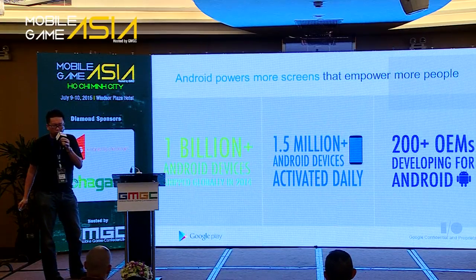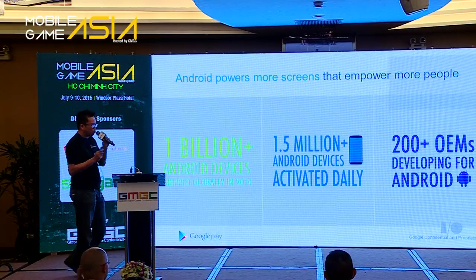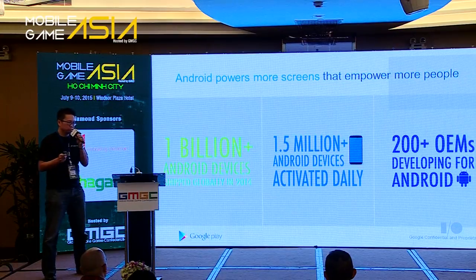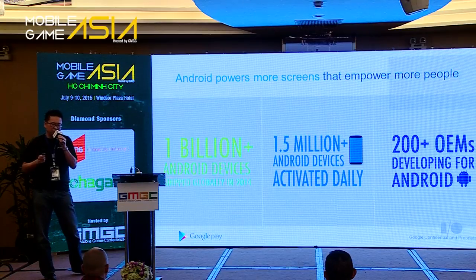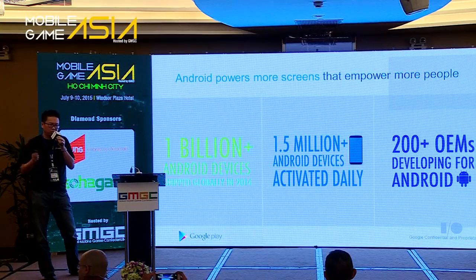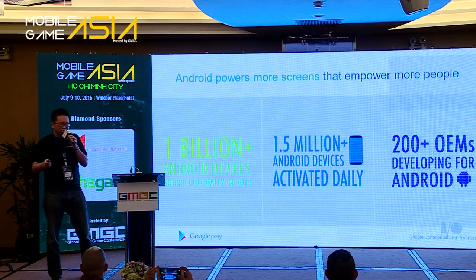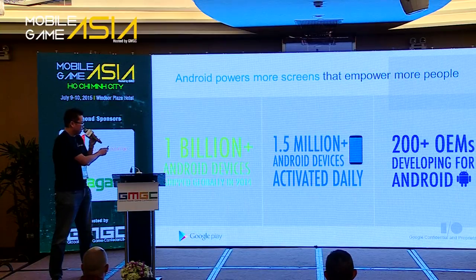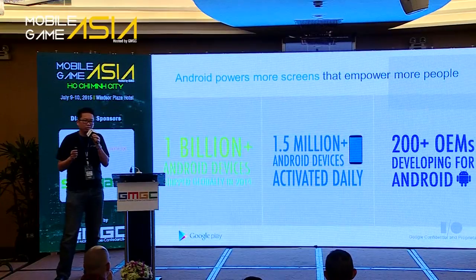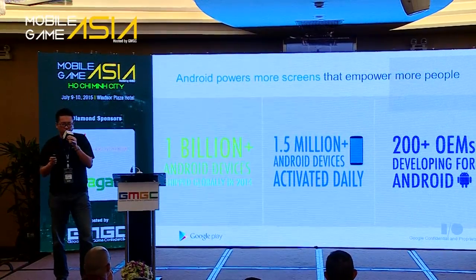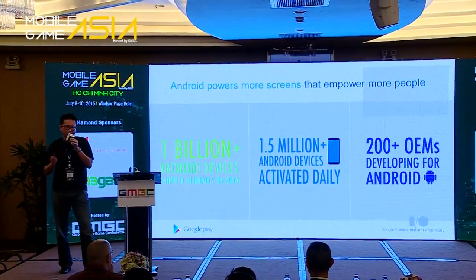A bit of background on Google and Android. Last year, one billion Android devices were sold — that equates to about 84% of smartphones in the world running on Android. By the end of tonight, one and a half million Android devices would have been activated. Over 200 handset manufacturers in the world develop for Android. It's a massive ecosystem and it's growing rapidly.